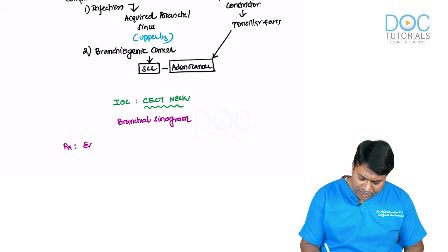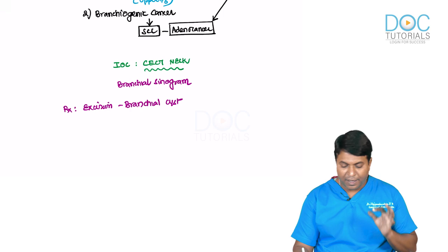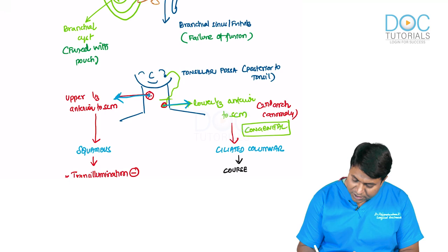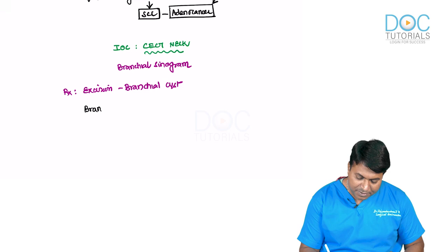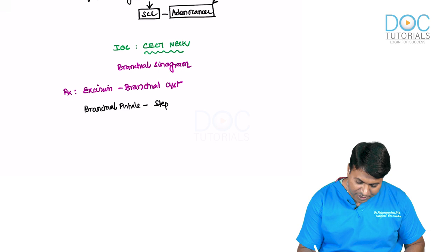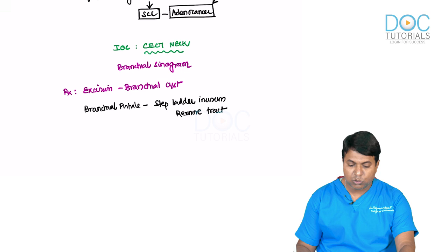Treatment of branchial cyst is careful excision. For branchial fistula, a step ladder incision is required — multiple incisions in the neck to remove the complete tract. This type of incision for branchial fistula is an MCQ asked in exams. Excision of the tract completely is essential.